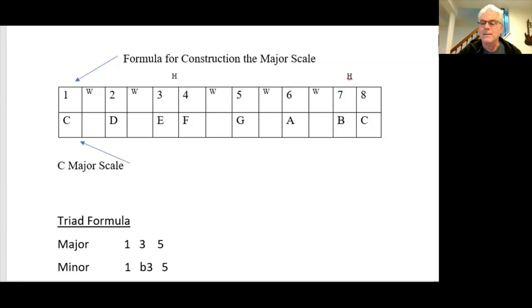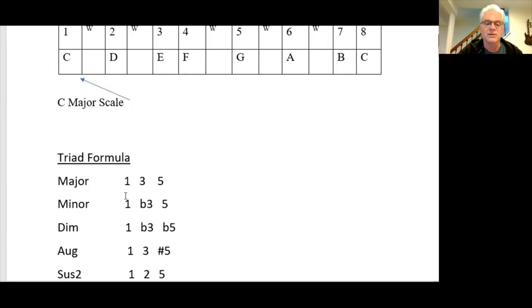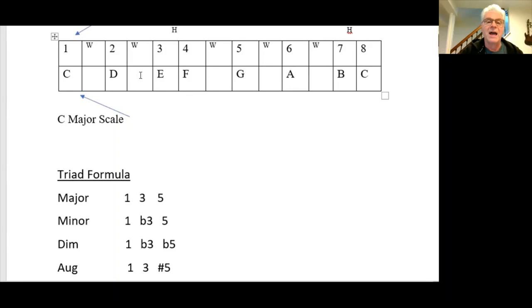Let's move on. A minor triad formula is we simply take the first, we flat the third, and the fifth. So in the key of C, it would be a C, E flat right there, and G.